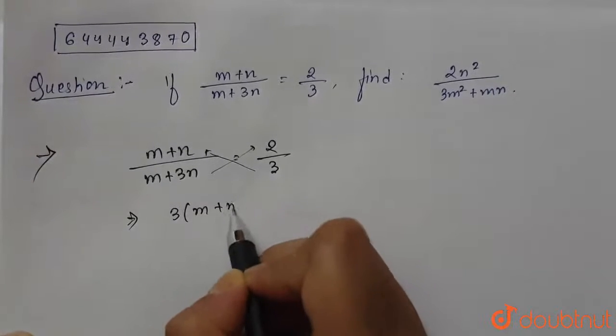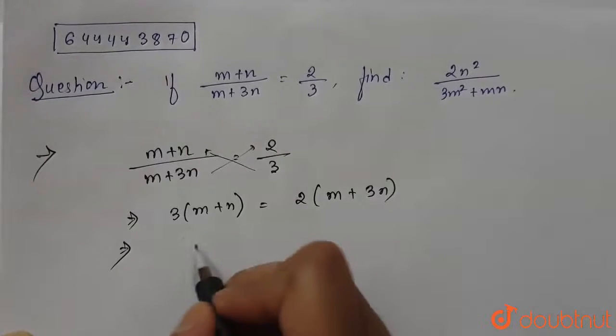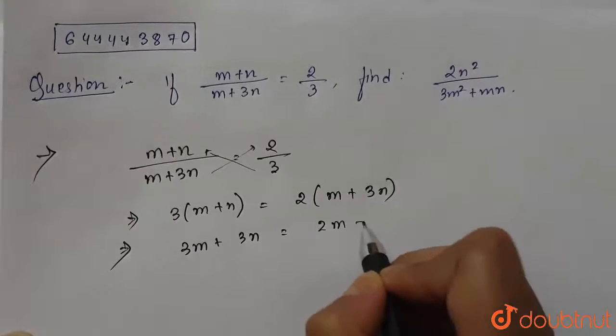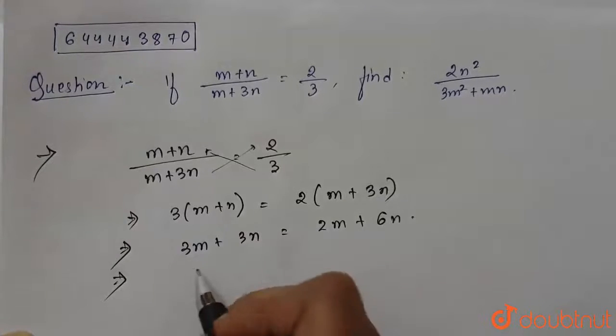Which equals 3m plus 3n equals 2m plus 3 into 2, 6n. So let's bring the m terms together and n terms together. This will be 3m minus 2m equals 6n minus 3n.